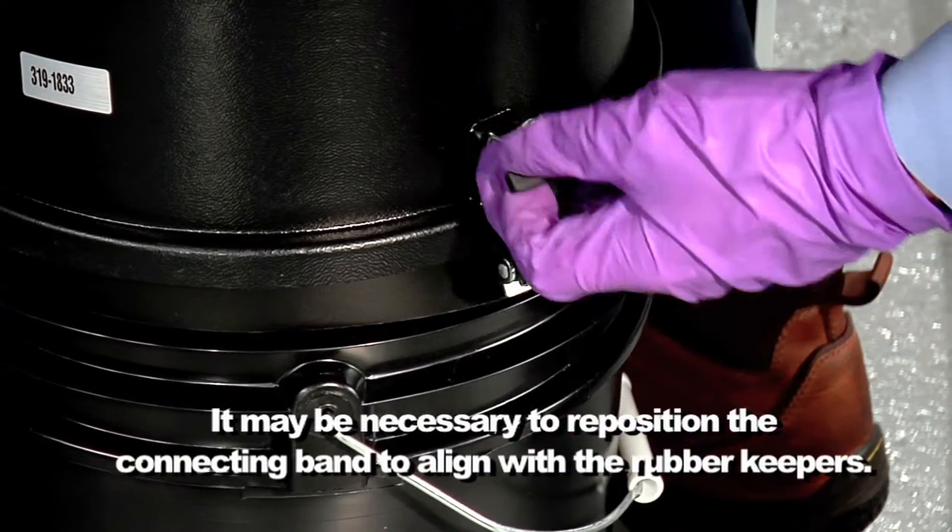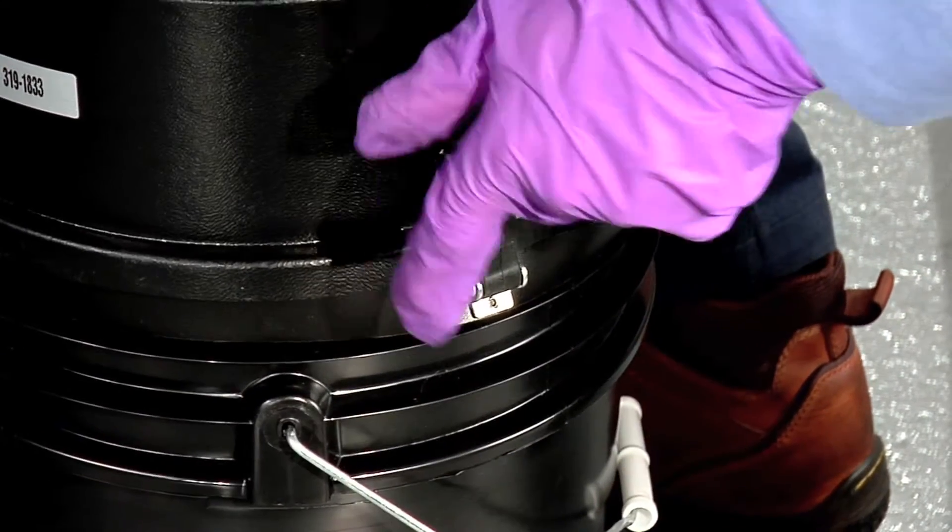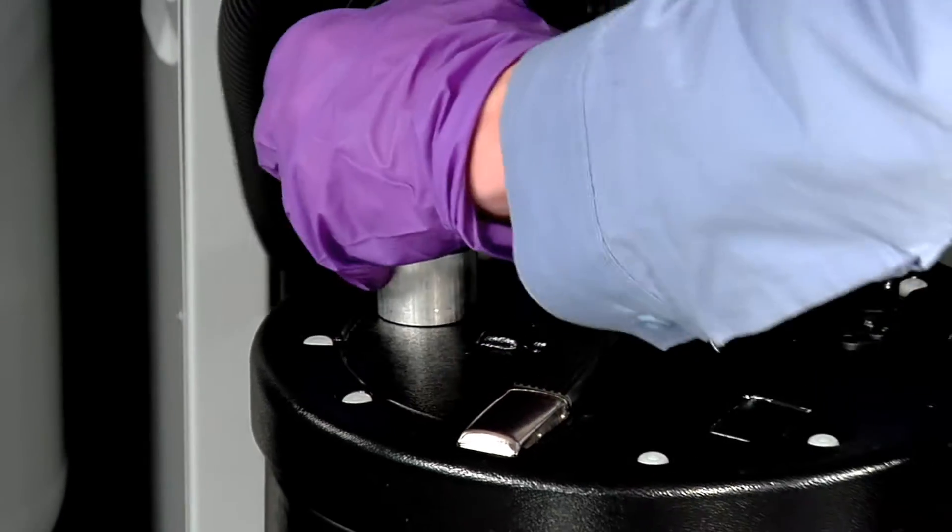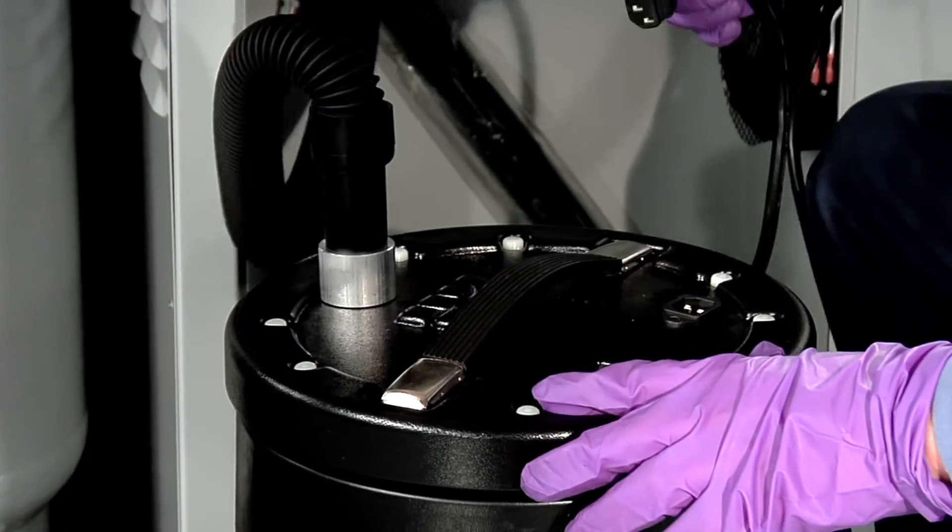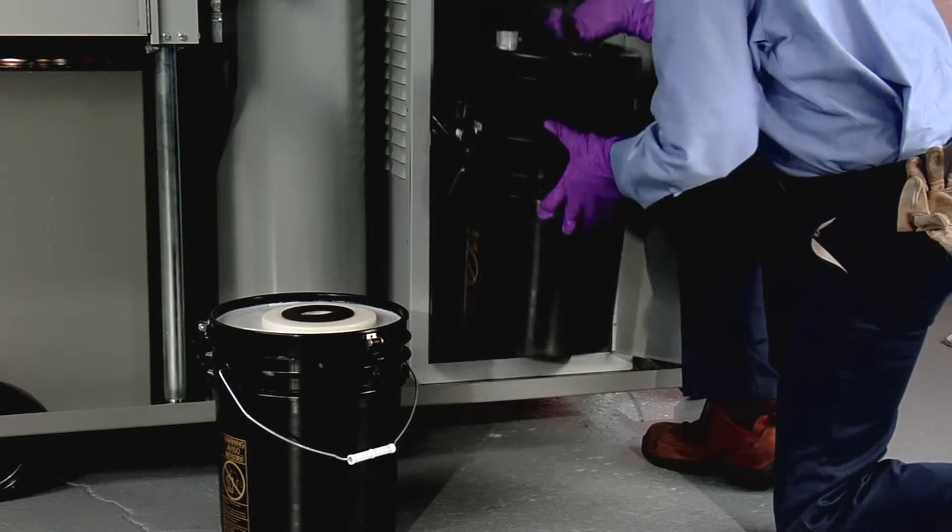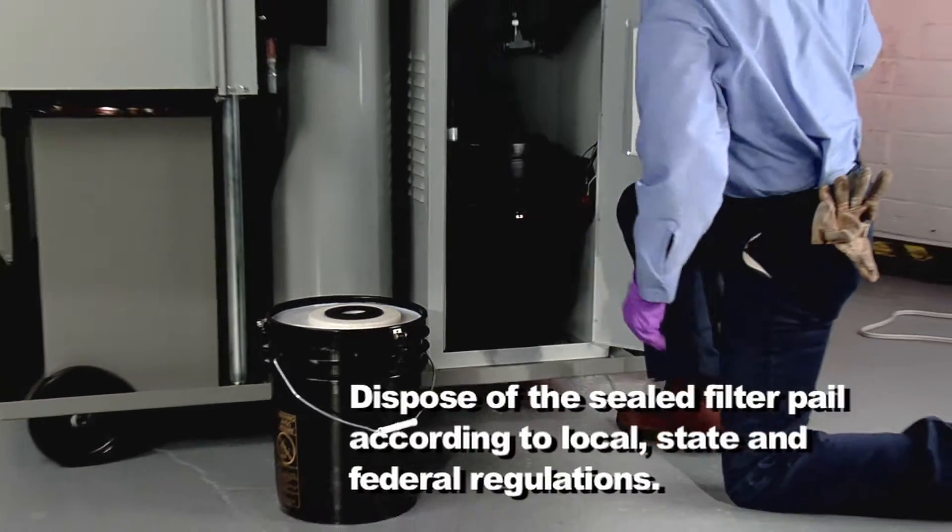Assemble the motor, vacuum hose and power cord to the new filter pail. Place the vacuum back into the cabinet with the vacuum hose connection positioned toward the front of the unit. Close the door.